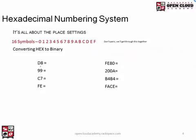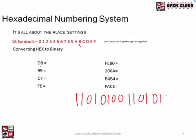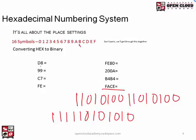Let's do the last example: B4B4FACE. B is 11, so 1101. 4 is 0100. Another B is 1101. Another 4 is 0100. F is 1111. A is 10, so 1010. C is 12, so 1100. And E is 14, so 1110. That is converting FACE — and the full number B4B4FACE — to binary. Always start on the left and always include all four bits in every translation.